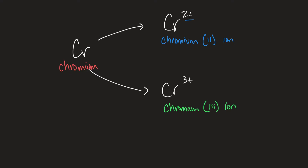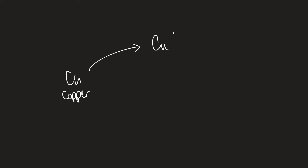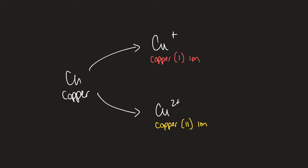Let's look at another example: copper. Copper could either be Cu+ (plus one) or Cu²+ (plus two). So if copper becomes a plus-one ion, we write 'copper Roman numeral I ion.' If it's a plus-two ion, we write 'copper Roman numeral II ion.'